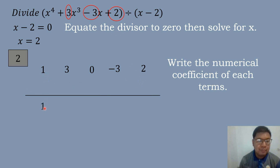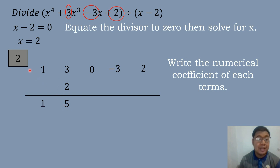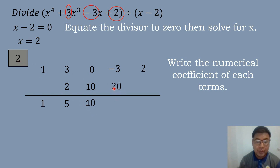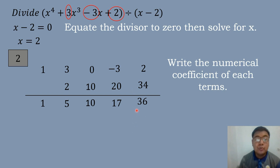We draw a line, bring down positive 1, and multiply 1 times 2 which equals 2. Then 3 plus 2 equals 5, and 5 times 2 equals 10. We add 0 plus 10 equals 10, then multiply 10 times 2 equals 20. We add negative 3 plus 20 equals positive 17, then 17 times 2 equals positive 34. Finally, 2 plus 34 equals 36.